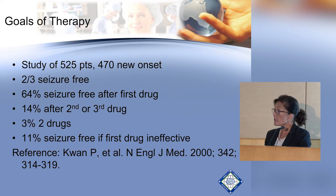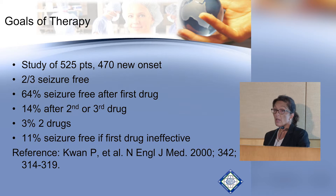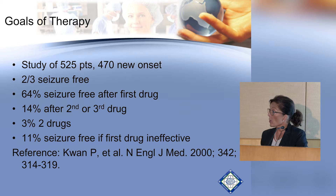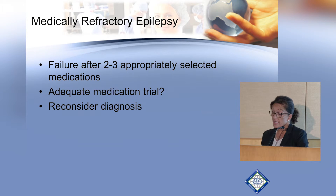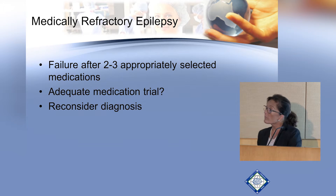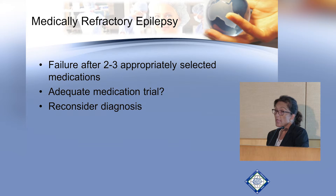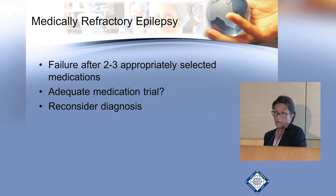Overall, only about 11% of patients become seizure-free if the first drug is ineffective due to lack of seizure control — not side effects. We now define intractable epilepsy as failure to achieve seizure freedom after two or three appropriately selected medications. We must also consider whether the medication trial was adequate, whether the medication worsened the seizure type, and whether the diagnosis is actually epilepsy or a mimic — such as psychogenic non-epileptic events or physiological non-epileptic events.